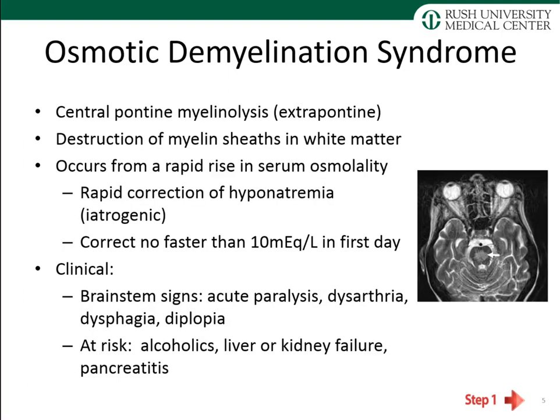The first disorder is osmotic demyelination syndrome, also called central pontine myelinolysis. I prefer that name because it better describes the location and what's happening. Although it's called central pontine myelinolysis, demyelination can occur outside the pons, which is why it was renamed osmotic demyelination syndrome. This syndrome involves destruction of the myelin sheath within the white matter, typically in the brainstem or pons, and is an iatrogenic disorder.